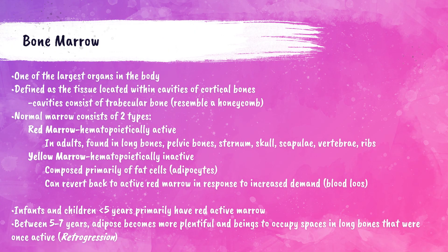The bone marrow is defined as the tissue located within the cavities of cortical bones, which consist of trabecular bone. This resembles a honeycomb with spaces within the bones for cells to grow. Bone marrow is one of the largest organs in the body and consists of two types: red marrow and yellow marrow.